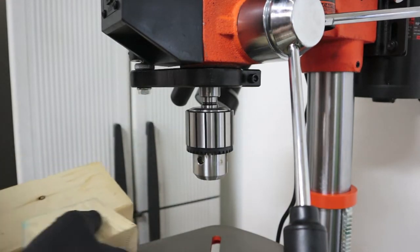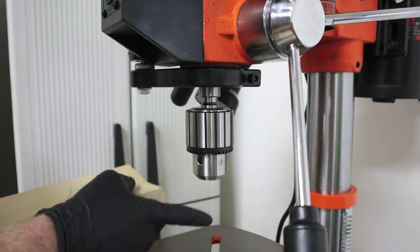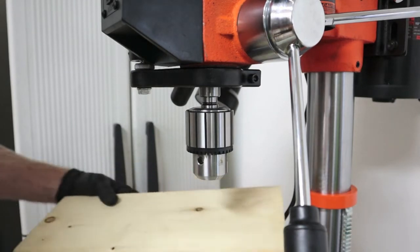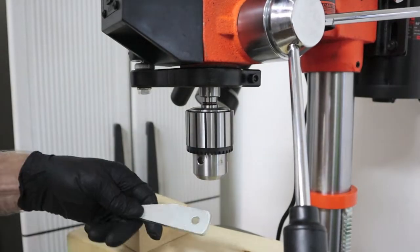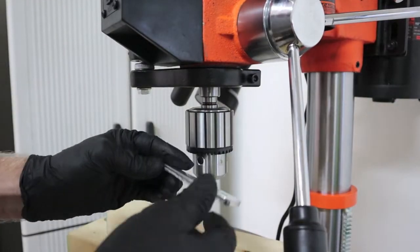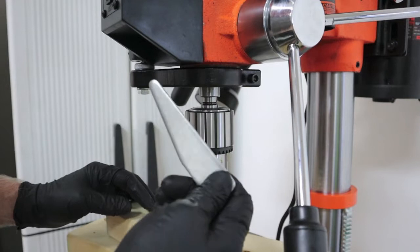It's going to fall out so you want to protect it. You don't want to let it hit this base very hard. Just put a block of wood there to protect it. A tool should come with your drill press - this wedge. This is what knocks it out.